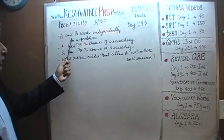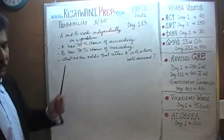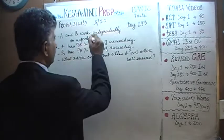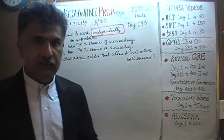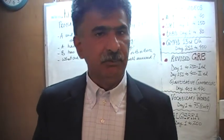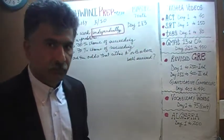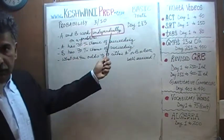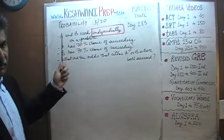The problem says A and B. We are told that we have two people, A and B, and they work independently on the problem. This phrase right here is very important — this is what we talked about on day 181, as to what it means for two events to be independent. I am assuming you already know it; if you don't, watch day 181. These two events are independent — the odds of one has nothing to do with the odds of the other.